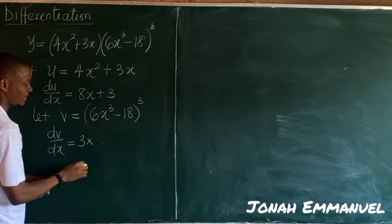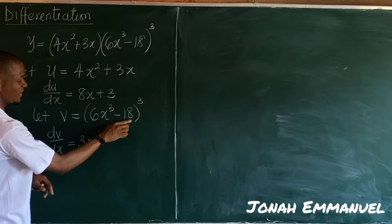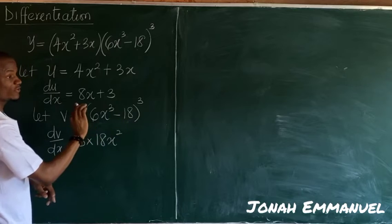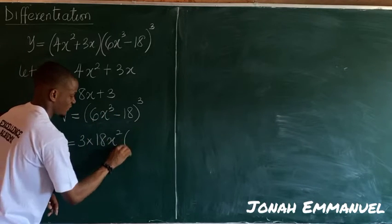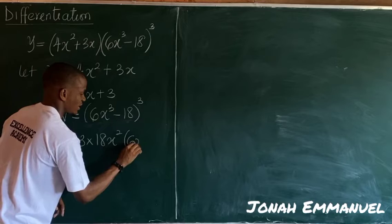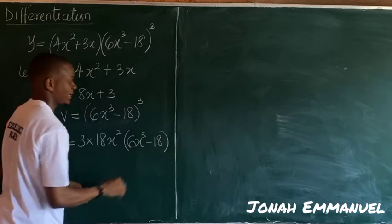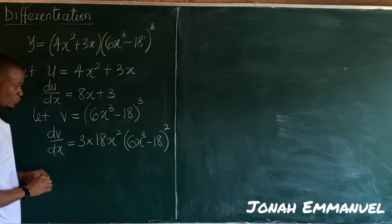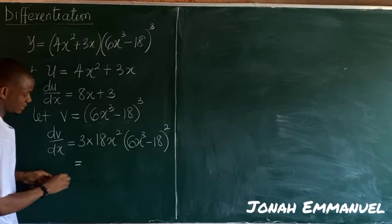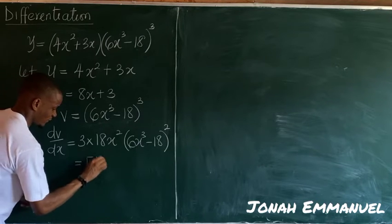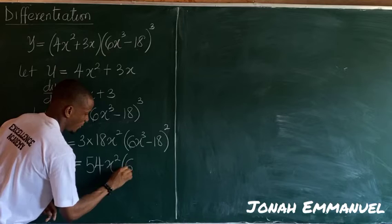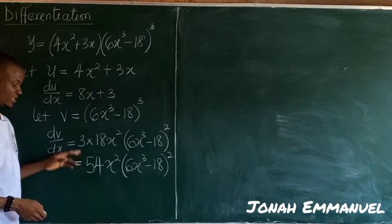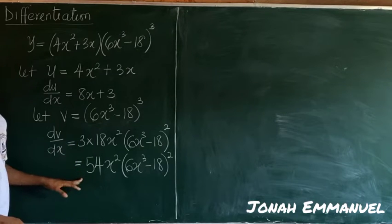If I differentiate this it gives me 18x squared, constant 0 is off. Next up repeat this. If I repeat this it becomes 6x cubed minus 18. Next up subtract 1 from 3, 3 minus 1 gives you 2. So this is now equal to, if I multiply this, this gives you 54x squared into 6x cubed minus 18 all squared.